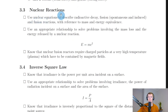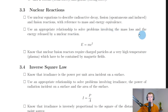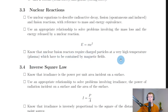Moving on to section three, nuclear reactions. You should be able to use nuclear equations to describe radioactive decay, fission (both spontaneous and induced), and fusion reactions with reference to mass and energy equivalence. You should be able to use E equals mc squared, where E is the energy released, m is the lost mass, and c is the speed of light in a vacuum, to solve problems involving mass loss and energy released. Lastly, you should know that nuclear fusion reactors require charged particles at very high temperature in a plasma, which must be contained by magnetic fields — this is called plasma containment.